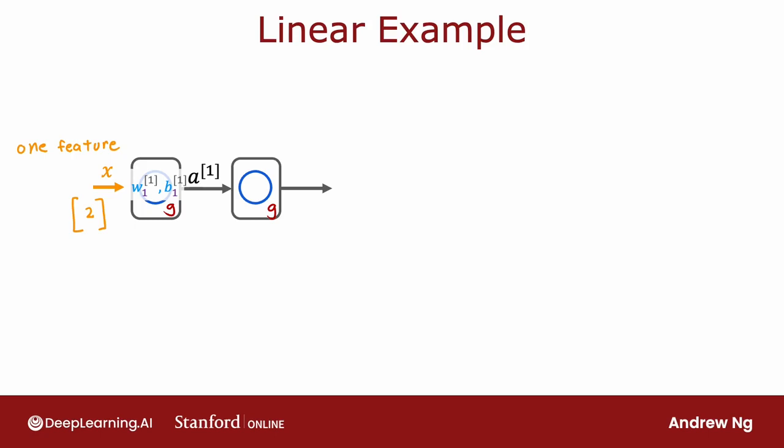And then the second layer is the output layer, and it has also just one output unit with parameters w2 and b2, and that outputs a2 which is also just a scalar, which is the output of the neural network f of x. Let's see what this neural network would do if we were to use the linear activation function g of z equals z everywhere.